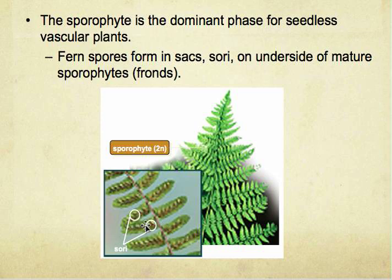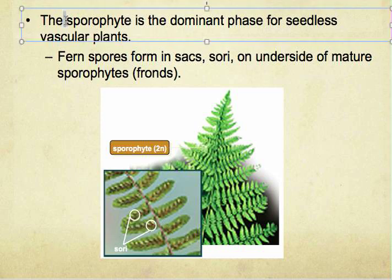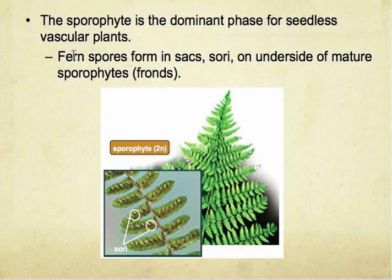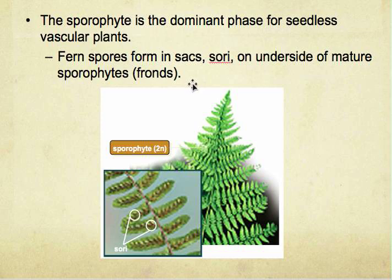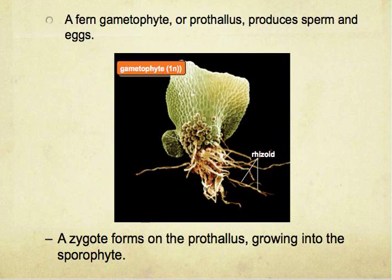When the plants are seedless, it has a sporophyte dominant phase. The fern spores are in sacs called sori on the underside of mature fronds, or the sporophyte. The fern gametophyte, or prothallus, produces sperm and eggs, as you can see over here.